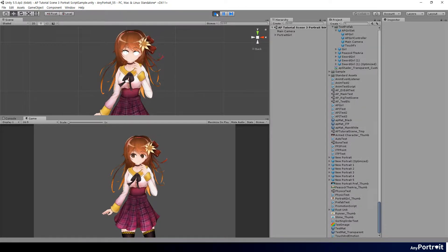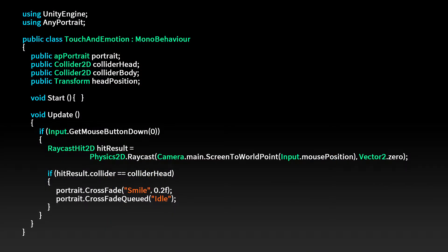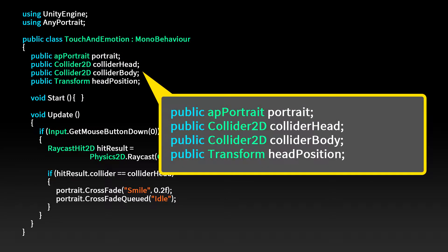Let's write a script to control the character. This is the basic code of the script. Add code to use the Any Portrait namespace. Create four public variables to connect in the scene: a character as a Portrait type, two Collider 2D as touch areas for the head and body, and a character head position transform for gaze processing.